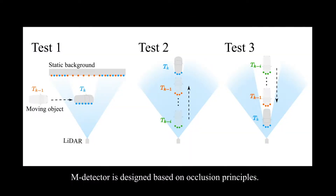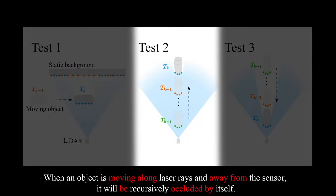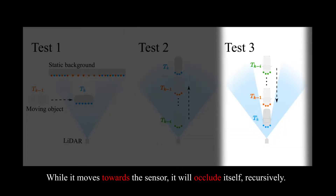MDetector is designed based on occlusion principles. When an object is crossing the LiDAR's laser rays, it will occlude the background. When an object is moving along laser rays and away from the sensor, it will be recursively occluded by itself. While it moves towards the sensor, it will occlude itself recursively.